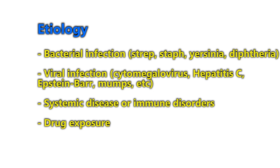The etiology of ATIN: the most common cause is infection — bacterial causes such as staph, strep, yersinia, and diphtheria, or viral causes like cytomegalovirus, hepatitis C, Epstein-Barr virus, and mumps. Systemic diseases or immune disorders such as systemic lupus erythematosus (SLE), sarcoidosis, and Wegener's granulomatosis are also implicated.